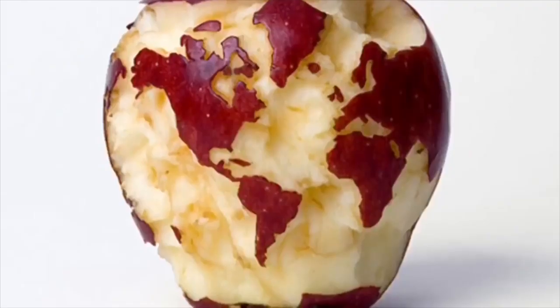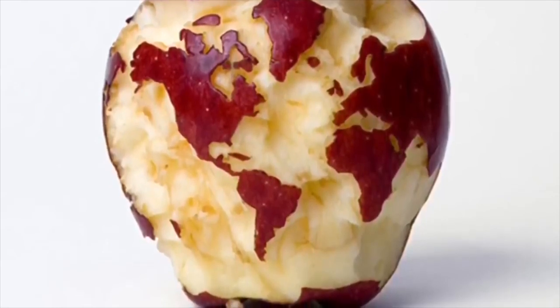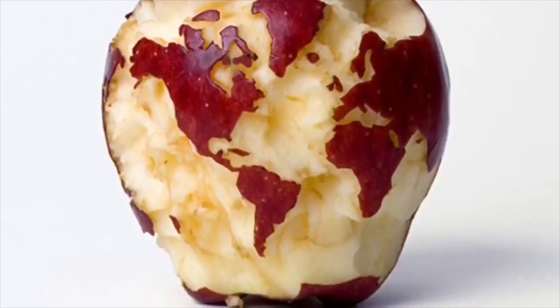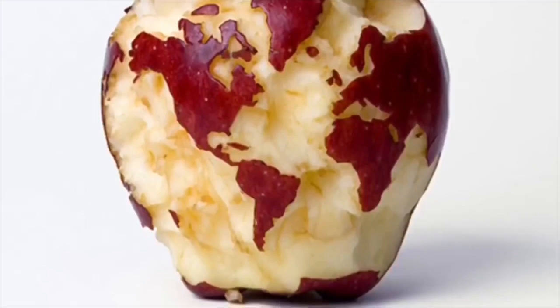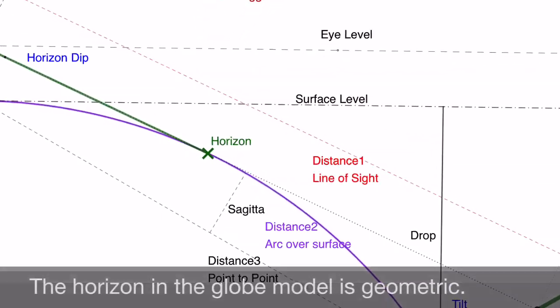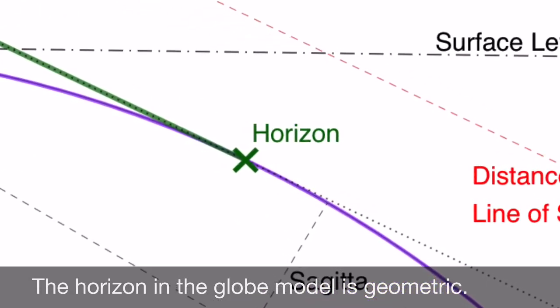How can you not see the problems with the whole black swan thing? You have failed to debunk the black swan. You require a geometric horizon. The horizon we experience absolutely is not geometric — spot on, Nathan. So you understand that what we see is not the geometric horizon. So why do you compare the distance of what you observe to the distance of the geometric horizon? You know full well — we have all seen the screenshots.